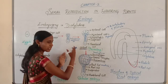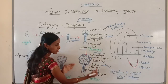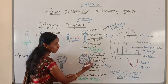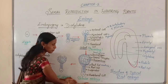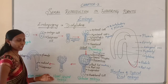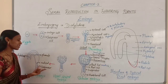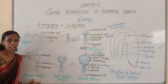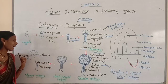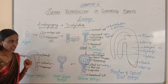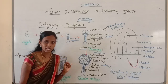This pro-embryo eventually transforms into a globular embryo. Then this globular embryo becomes a heart-shaped embryo, and finally it transforms into a mature embryo. This mature embryo consists of a plumule, a radicle, and two cotyledons — completing embryo development in dicotyledons.